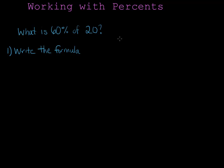The first step is to write the formula, which is percent over 100 equals part over whole. And you see that here. I'm using P for part and W for whole.